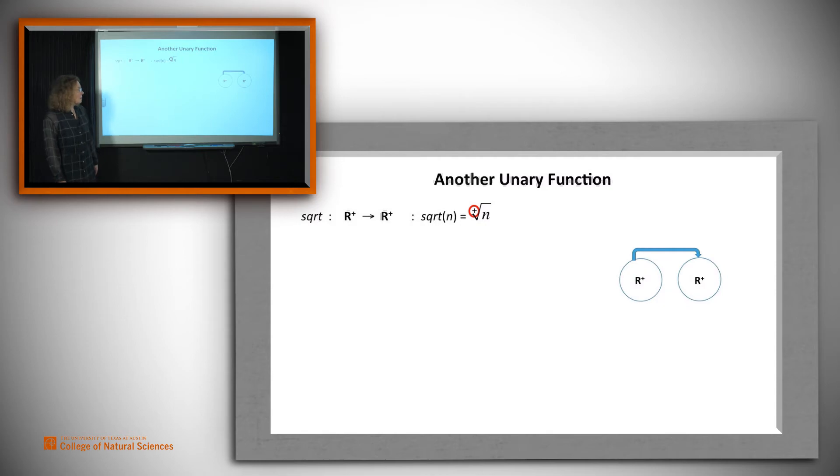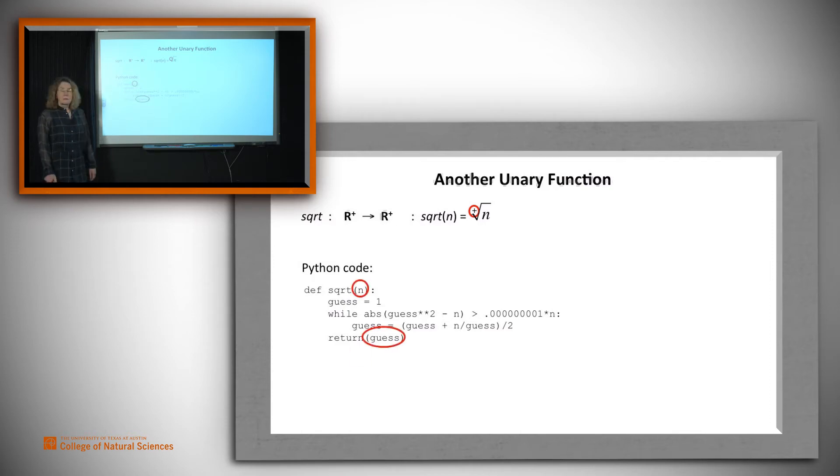And so we map from the positive reals to the positive reals. And here's another piece of Python code. It takes in one number, returns one number. In case you care, if you want to look at this code, it uses a cool algorithm called Newton's method. But you don't need to know that if you just want to compute square roots. So you can invoke this function, you can say square root of 104, and you get back a number that's a little bit bigger than 10, which is what you'd expect.